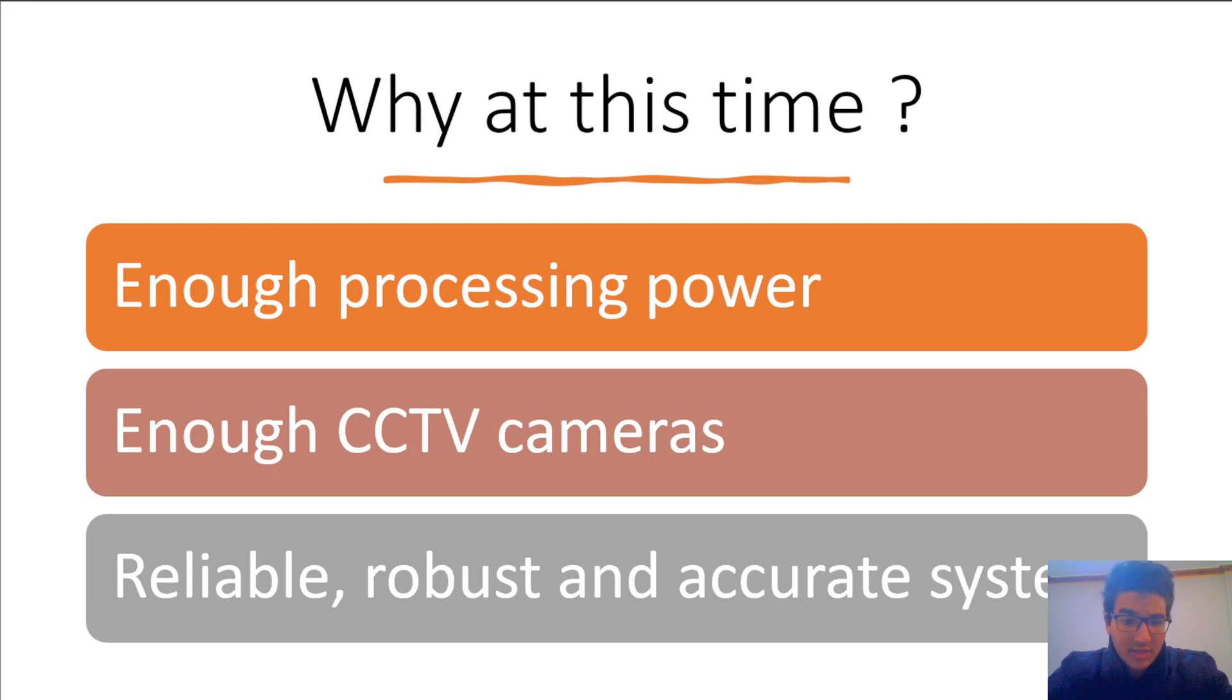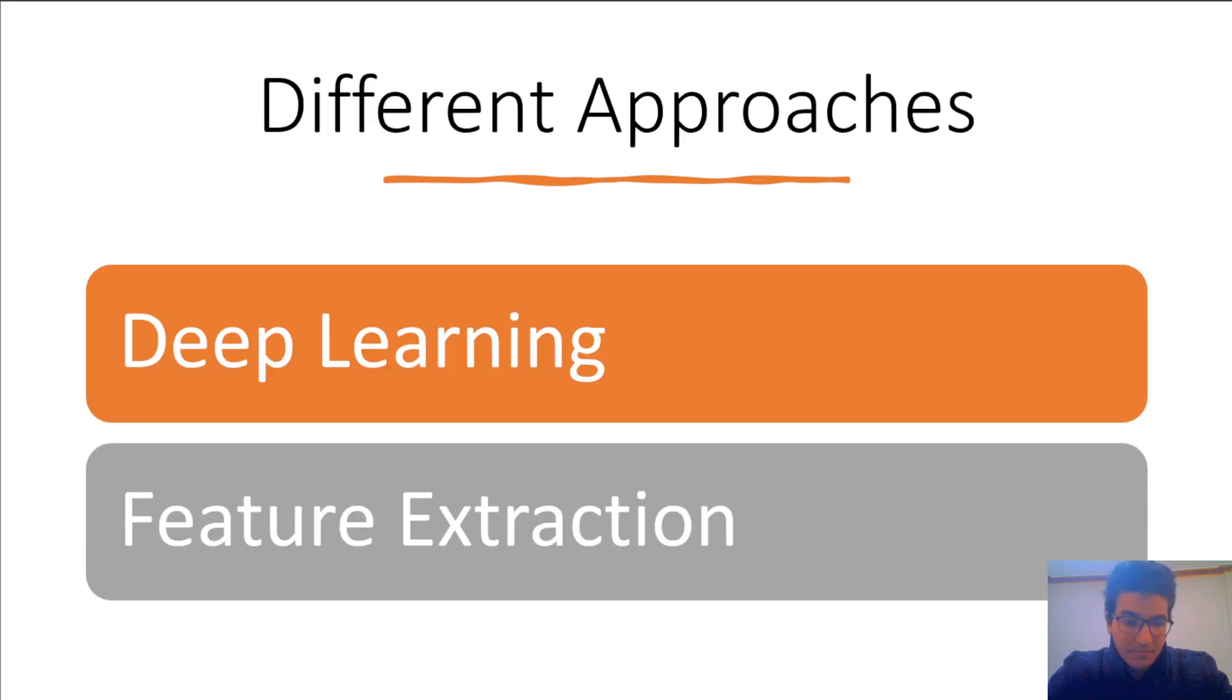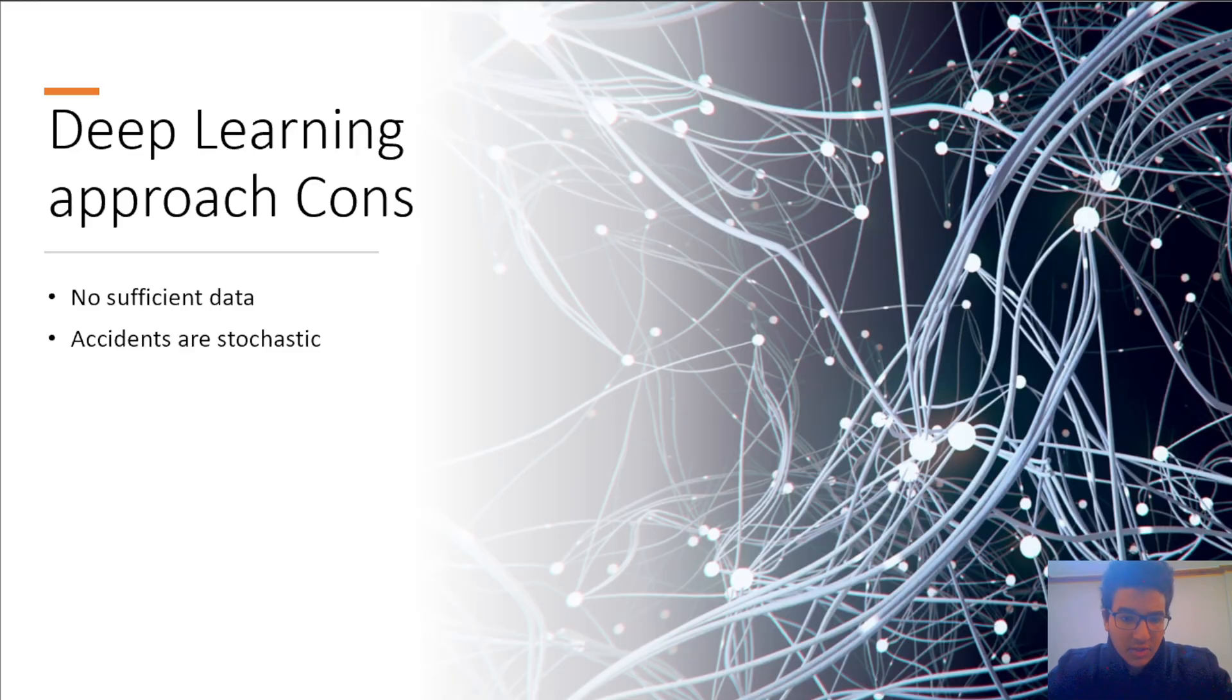So let's take a quick look at the recent work in this area. The work done for this problem was in two directions. One is using deep learning approach. Two is using feature extraction. So we have investigated the deep learning approach. But the results of this approach were actually so bad, as this is hard a problem to be solved in current days using deep learning. Why? Because there is no sufficient data for accidents, and the accidents itself are stochastic. So you need very large data set before you propose the system to be reliable.